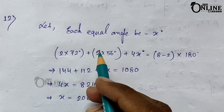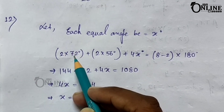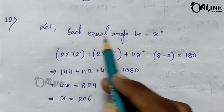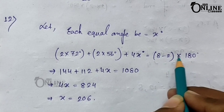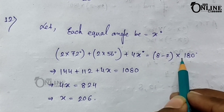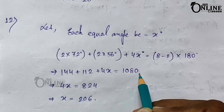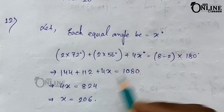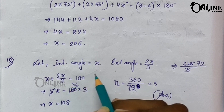Problem number twelve: an octagon has two pairs of equal angles, one measuring 72° and the other 56°, and four other equal angles. Let each equal angle be x. So 2 × 72° + 2 × 56° + 4x = sum of interior angles of an octagon = (8 − 2) × 180° = 1080°. Therefore 144 + 112 + 4x = 1080, giving x = 206°.